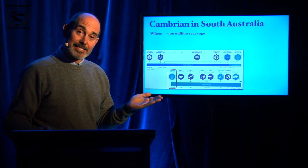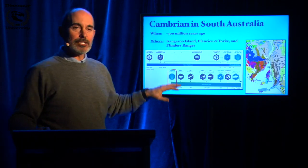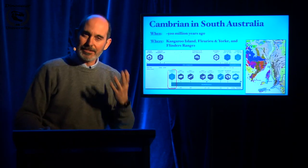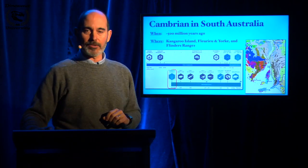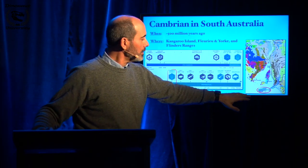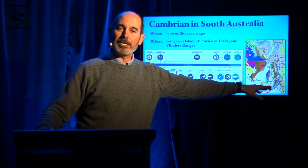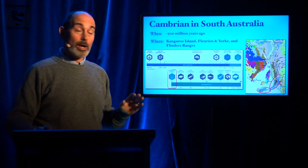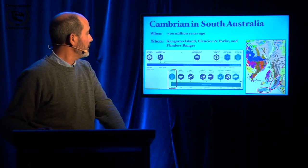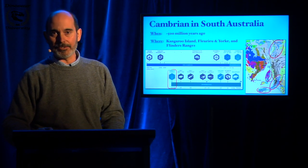The next question is where. The Ediacaran is quite well registered. It's a good record of Cambrian in South Australia. Most of Kangaroo Island is actually Cambrian, but also in the Fleurieu Peninsula and the Adelaide Hills, as well as the northern part of the York Peninsula and in the Flinders Ranges.